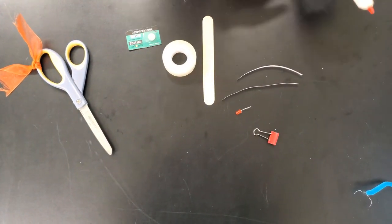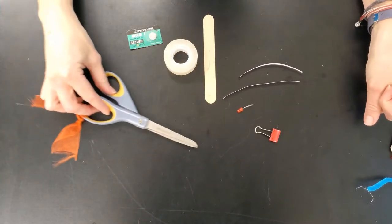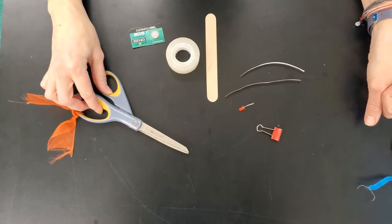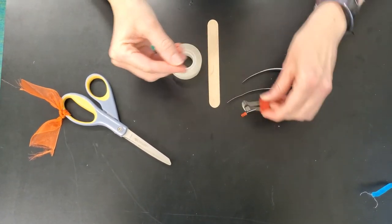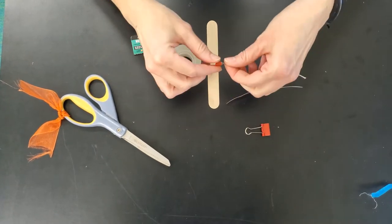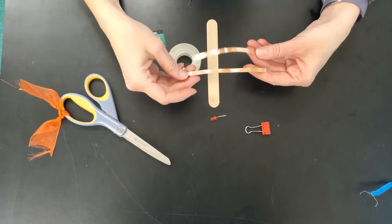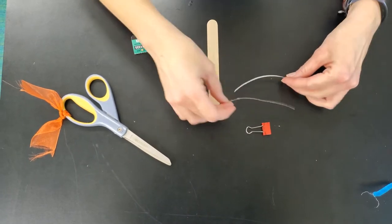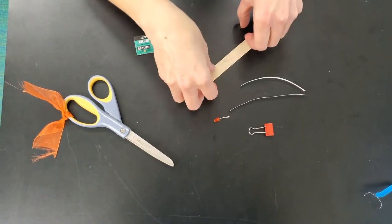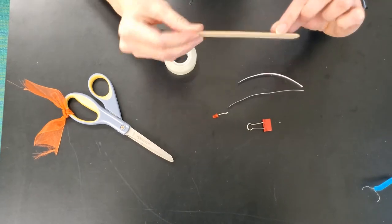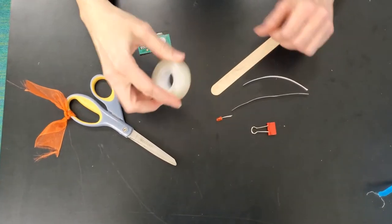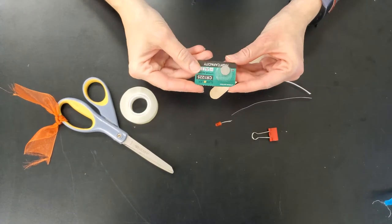The tools you see in front of you that you will need is a pair of scissors, a binder clip, an LED, two pieces of copper tape, a tongue depressor popsicle stick, some tape, and a button battery.